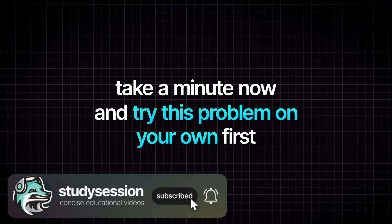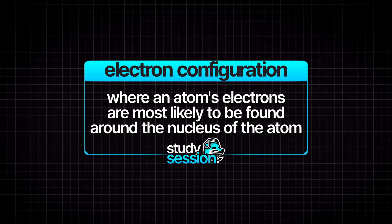When finding the electron configuration of an atom, we are being asked where does this atom place its electrons, i.e. what shells and orbitals are its electrons most likely to be found in.